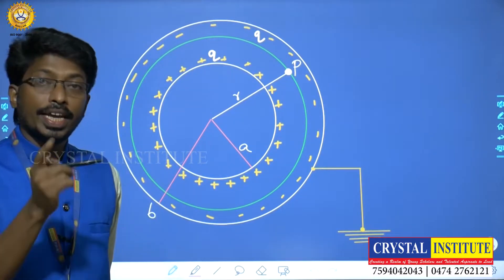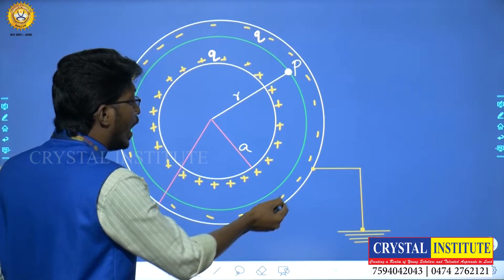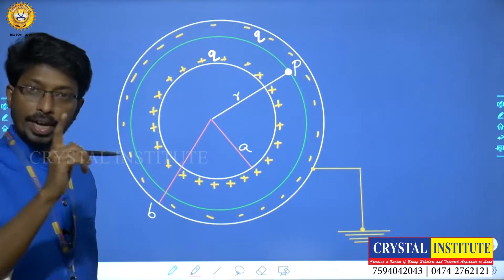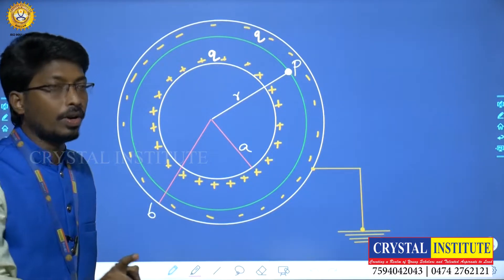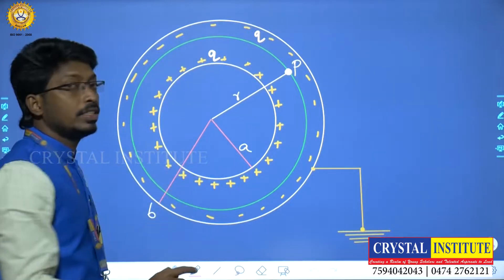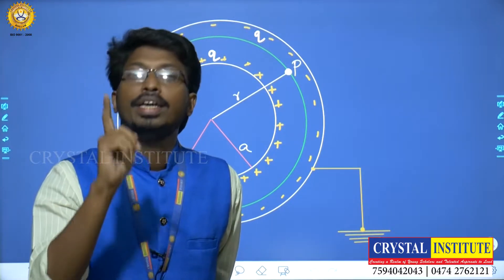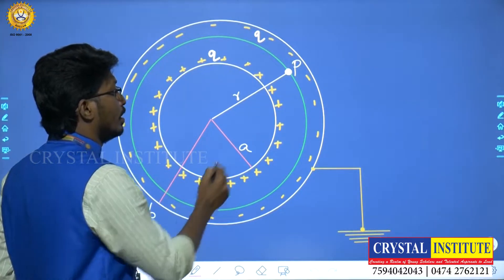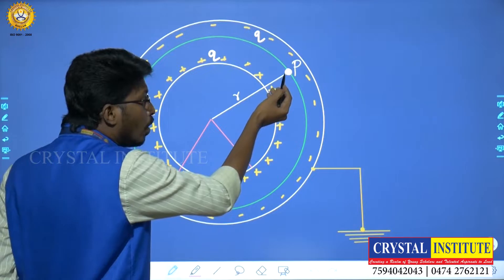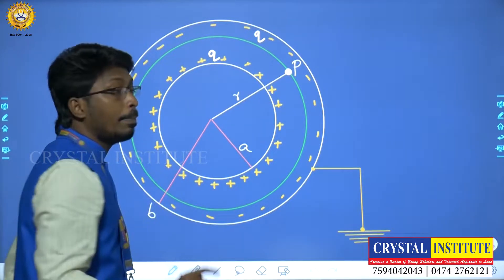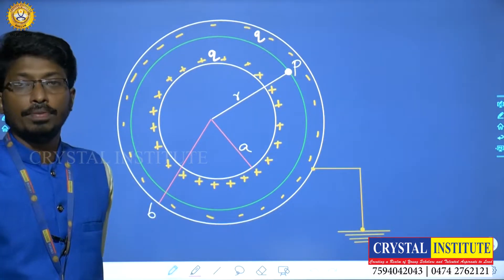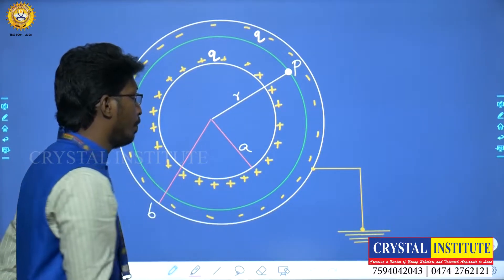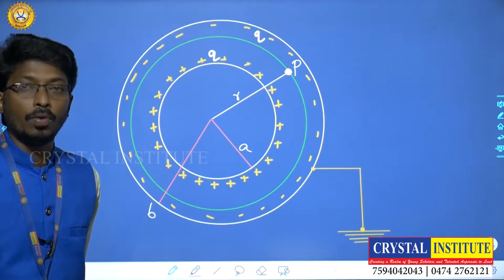Due to the influence of the positive charge Q on the inner shell, the inner portion of the outer shell acquires a minus charge. The condition is that the magnitude of the plus charge and the minus charge are equal. The outer shell is also equal in magnitude. Now, between the two shells, there is a point P where the electric field exists.